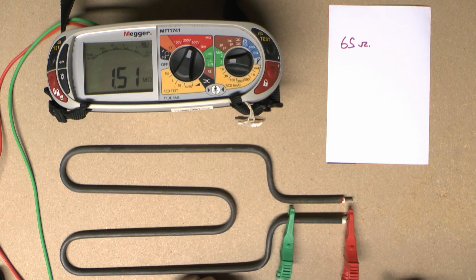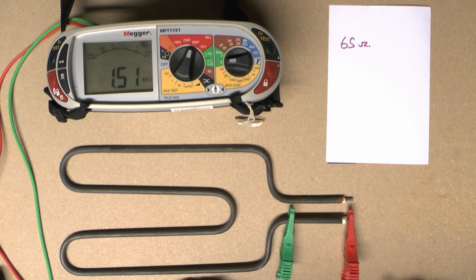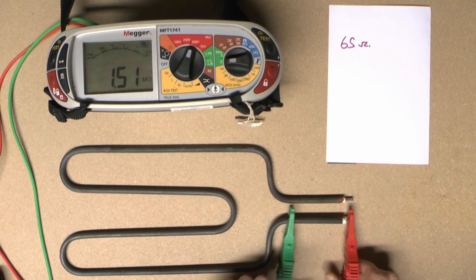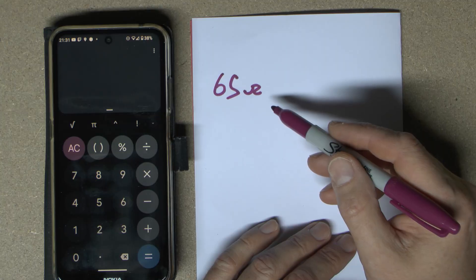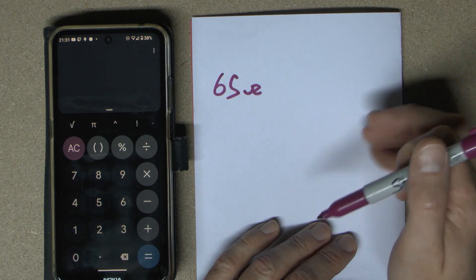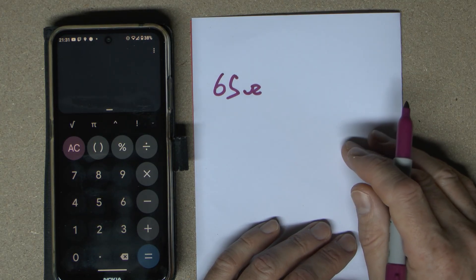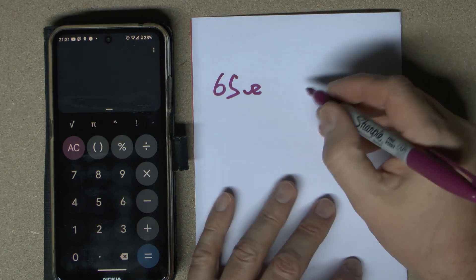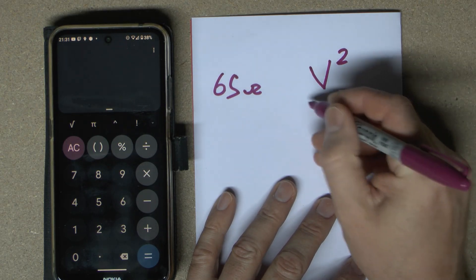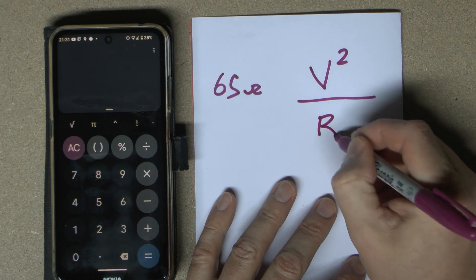If it comes up as shorted, or around 0.1 mega ohms or something, then the element is faulty and needs to be replaced. The resistance depends on the power of the element, and you can use a quick calculation to get an idea of what the power was. That should be within the realm of what you'd expect. The formula is voltage squared divided by the resistance.